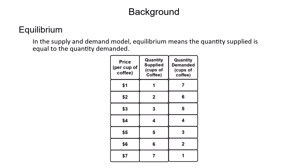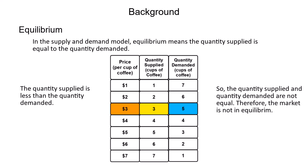If the price the firm is willing to accept for a cup of coffee is $3, it will supply three cups of coffee. However, if a cup of coffee is $3, consumers are willing to purchase five cups. At a price of $3 per cup of coffee, the quantity supplied of three cups is less than the quantity demanded of five cups. Since the amount of coffee supplied by the firm is less than what is demanded by consumers, the quantities are not equal. Therefore, the market is not in equilibrium.